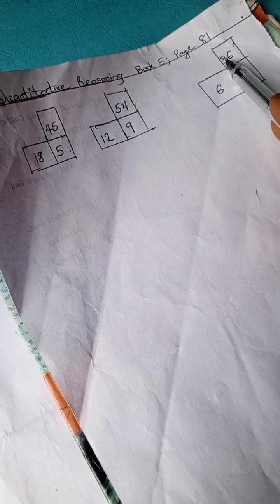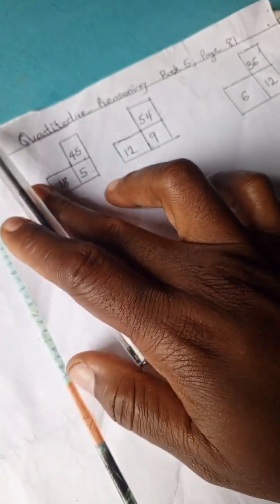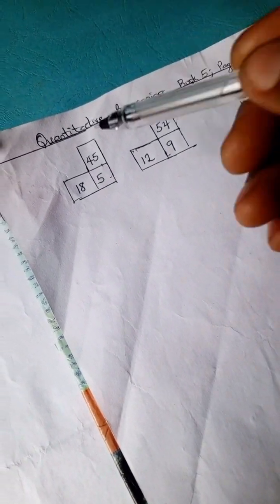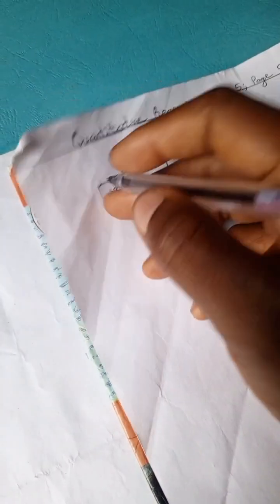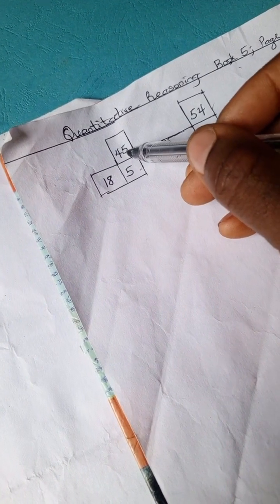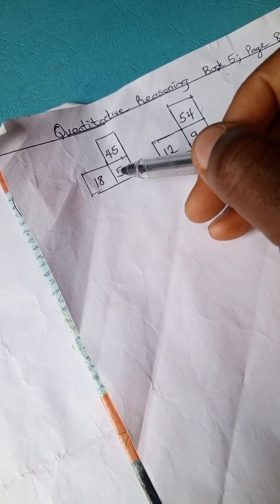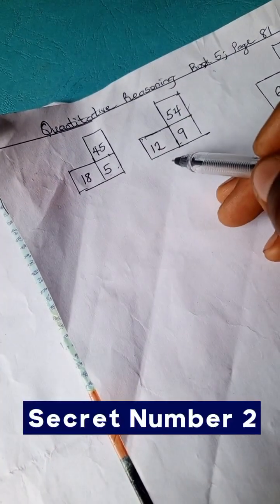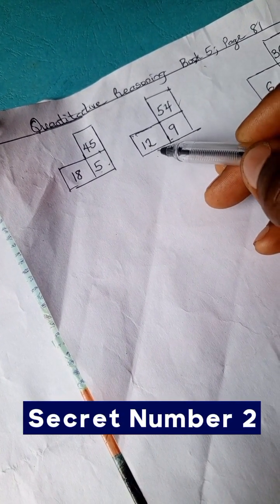So we're going to calculate what was done to get 45. When we divide 18 by 2, we have 9. 9 times 5 is 45. Let's try if it works here: 12 divided by 2